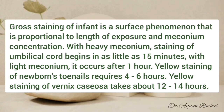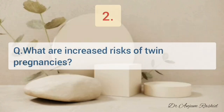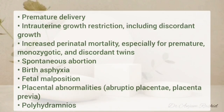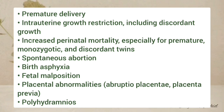Staining of the vernix caseosa takes about 12 to 14 hours. What are the increased risks of twin pregnancies? These include premature delivery, intrauterine growth restriction including discordant growth, increased perinatal mortality especially for premature monozygotic and discordant twins, spontaneous abortion, birth asphyxia, fetal malposition, placental anomalies including abruptio placentae and placenta previa, and polyhydramnios.